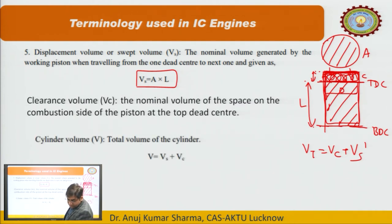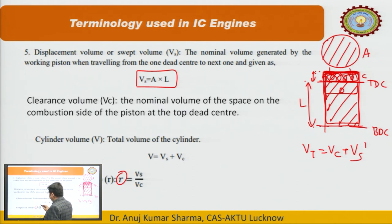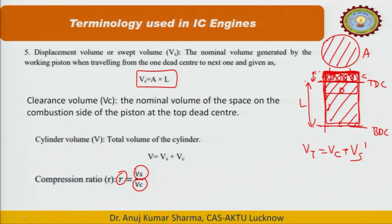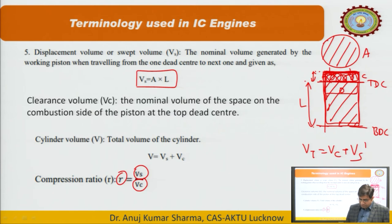The total volume of the cylinder has already been discussed. Now, the compression ratio is a very important parameter, represented by R. It is the ratio of the total volume to the clearance volume. For diesel engines (CI) the compression ratio is around 18 to 21, and for petrol engines (SI) it is around 12 to 14. That is why diesel engines are heavier compared to petrol engines.